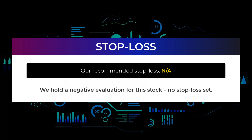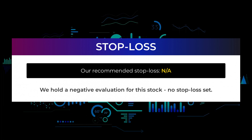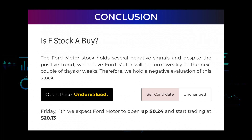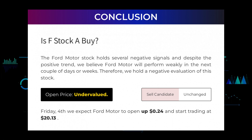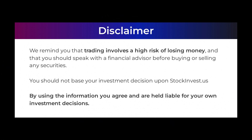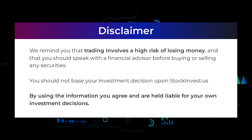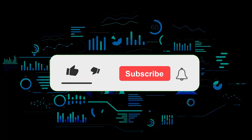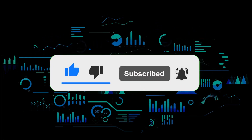We hold a negative evaluation for this stock with no stop loss set. Ford Motor holds several negative signals, and despite the positive trend, we believe Ford Motor will perform weakly in the next couple of days or weeks. Our systems find the current price is undervalued, and for trading on Friday 4th we expect Ford Motor to open up 24 cents and start trading at $20.13. We remind you that trading involves a high risk of losing money and that you should speak with a financial advisor before buying or selling any securities. You should not base your investment decision solely upon StockInvest.us. Thanks for watching — leave a comment if you have any questions and don't forget to subscribe.